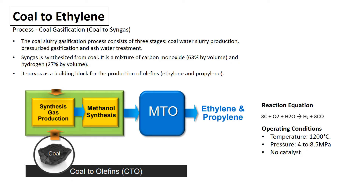The first direction pathway to produce ethylene is from coal. The coal should be converted to syngas via the coal gasification process. Syngas is basically a mixture of carbon monoxide and hydrogen, and it serves as a building block for the production of olefin, in our case ethylene. The coal gasification process is operated under a temperature of 1200 degrees Celsius and pressure of 4 to 8.5 MPa in order to produce syngas.